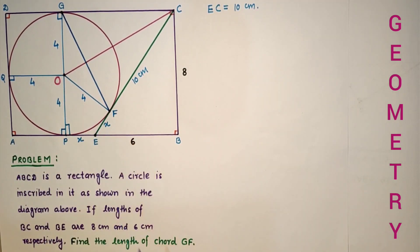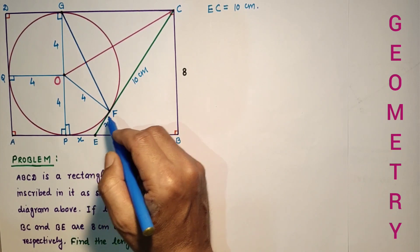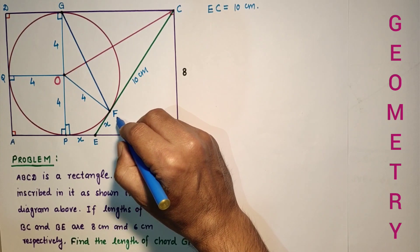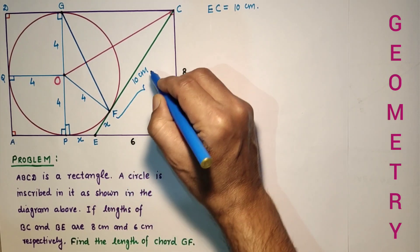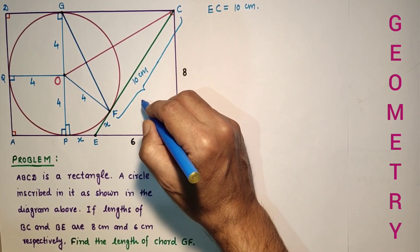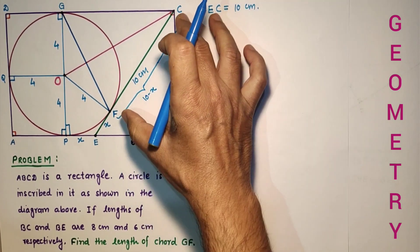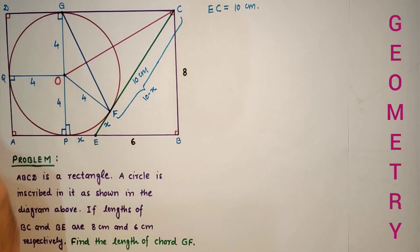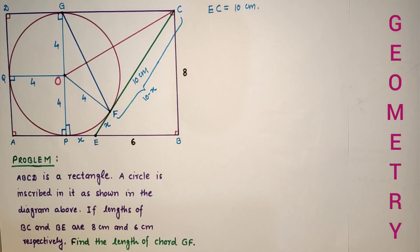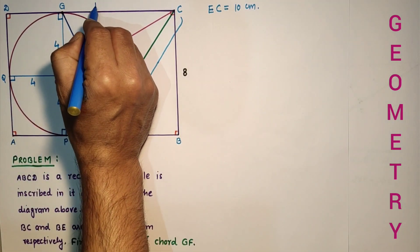OF is 4, and since we assumed EF as X, the remaining part FC is equal to 10 minus X. So FC equals 10 minus X. Now, CF equals CG because tangents drawn from an exterior point to the circle are equal, so CF equals CG equals 10 minus X.